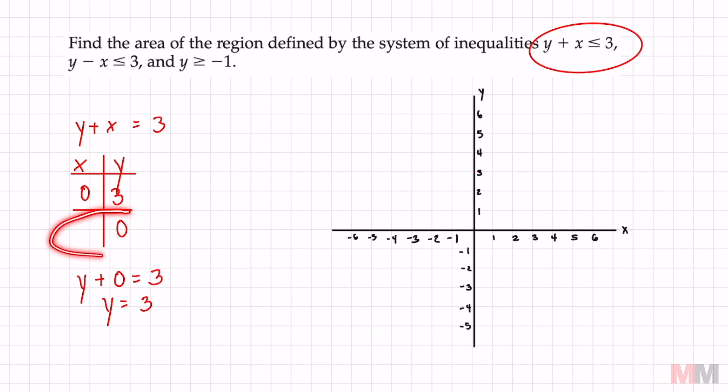To get the second point you do the same thing. We're going to replace y with zero so zero plus x equals three. You don't even need to show your work I'm just showing for the people who are confused. Now I got two points for that red inequality which are zero three and three zero.